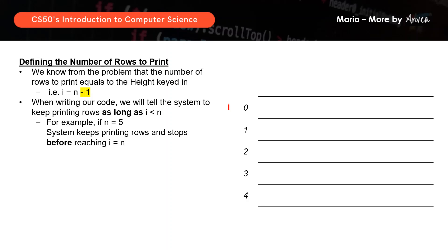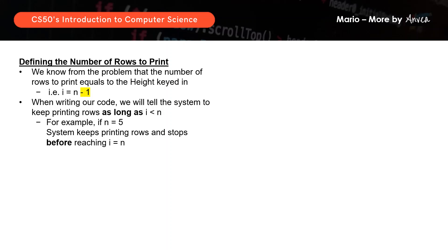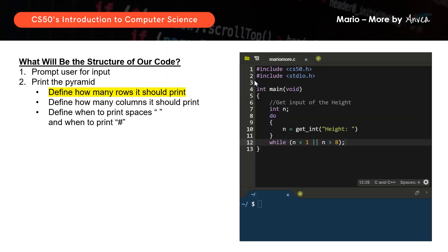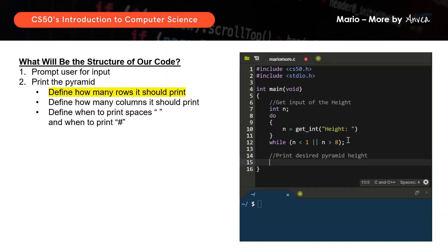Now we're going to put this into C. We will write a comment about what this section will do, which is to print the desired pyramid height. We will start with the for loop: for int i equals to 0, because we are starting from 0, then we will print as long as i is less than N, and we're doing it incrementally. And that's all — we have just completed that step.